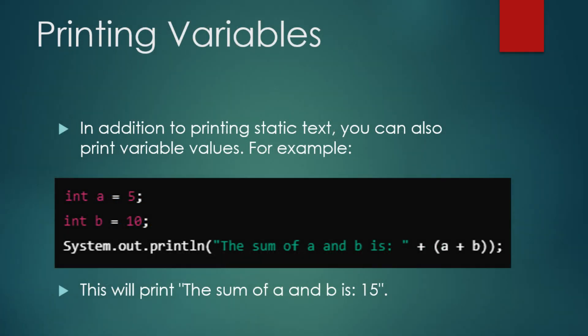Next, let's talk about printing variables. You can use System.out.println to print more than just static text — you can also print the values of variables. Let's look at an example where we print the result of a calculation: int a = 5, int b = 10, System.out.println("The sum of a and b is: " + a + b). We declare two integers a and b. The expression a + b calculates their sum and the result 15 is printed to the console along with the text. This is extremely useful when you want to display the result of a computation.